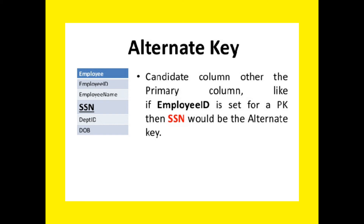Next is alternate key. A candidate column other than the primary column — for example, if employee ID is set as the primary key, then SSN would be an alternate key. The alternate option which can become the primary key among candidate keys is known as an alternate key. If there are two candidate keys, one becomes the primary key and the other is known as the alternate key. In the employee table, SSN is known as an alternate key because it can also become the primary key.